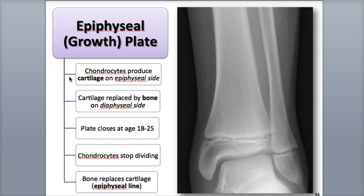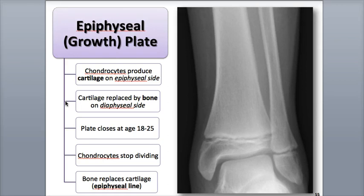The epiphyseal plates are layers of hyaline cartilage cells called chondrocytes that divide and grow until they close, meaning they stop dividing sometime during age 18 in women to around age 21 in men, but that can occasionally go a little bit longer into the mid-20s. In women, the plate usually closes one to two years earlier than in men. First, cartilage on the epiphyseal side of the growth plate grows in length, and secondly, cartilage on the diaphysial side of the growth plate is replaced with bone by endochondral ossification, which we reviewed in the previous podcast.